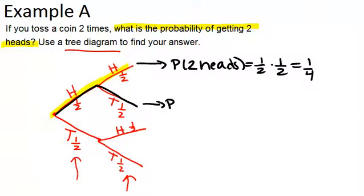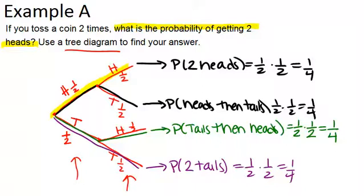So the probability of, for example, heads then tails is also one half times one half which is one fourth. And you could do the same thing for the last two. So the probability of each of these four outcomes is one fourth. And what we care about ultimately is this one. To answer our question, the probability of getting two heads is one fourth.